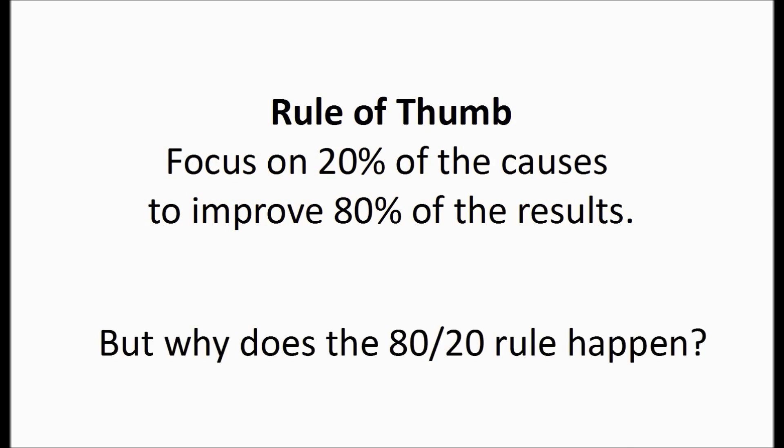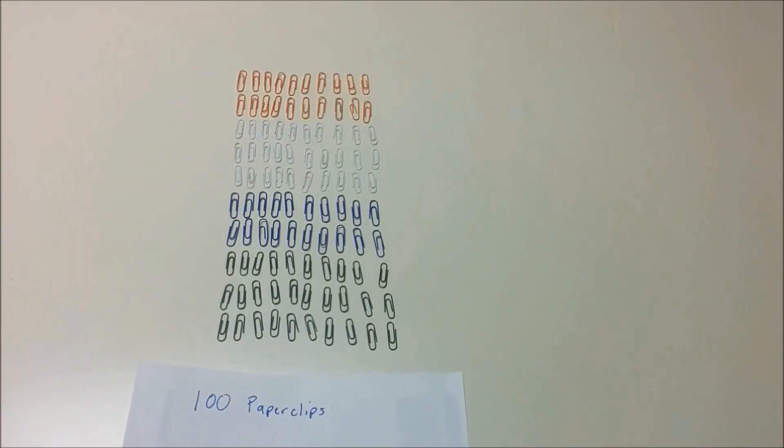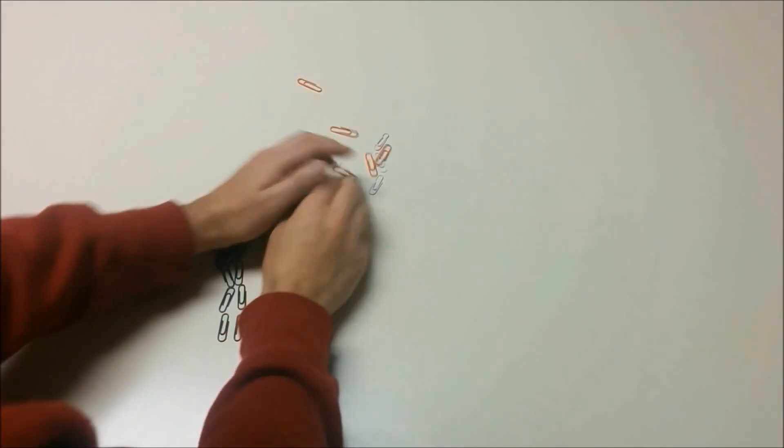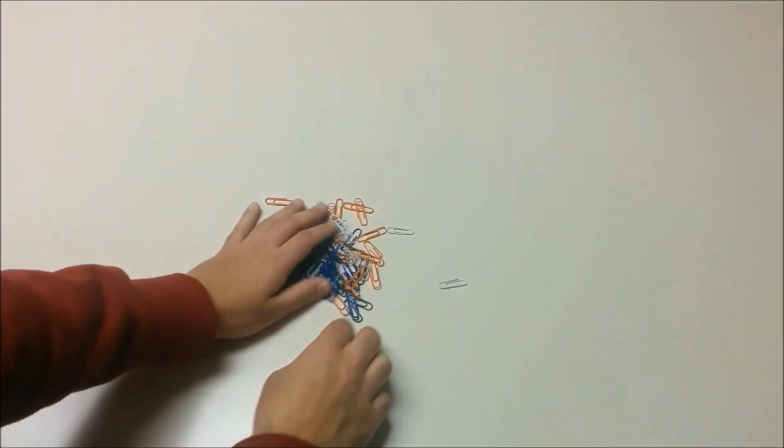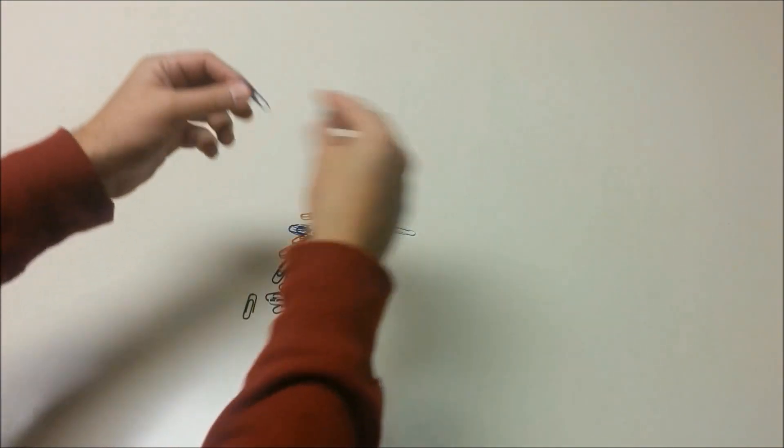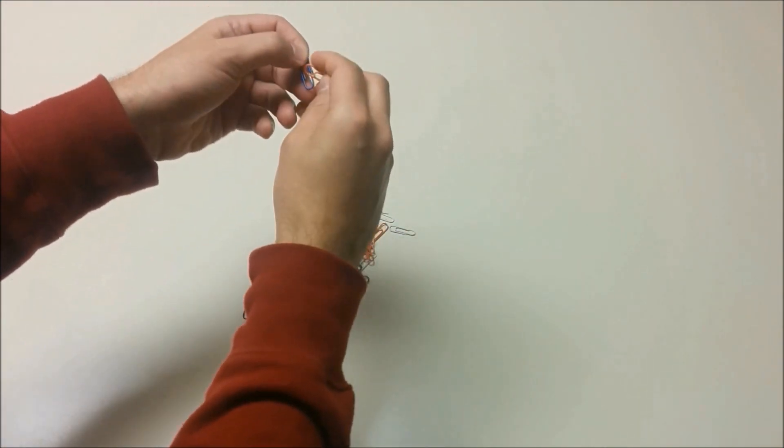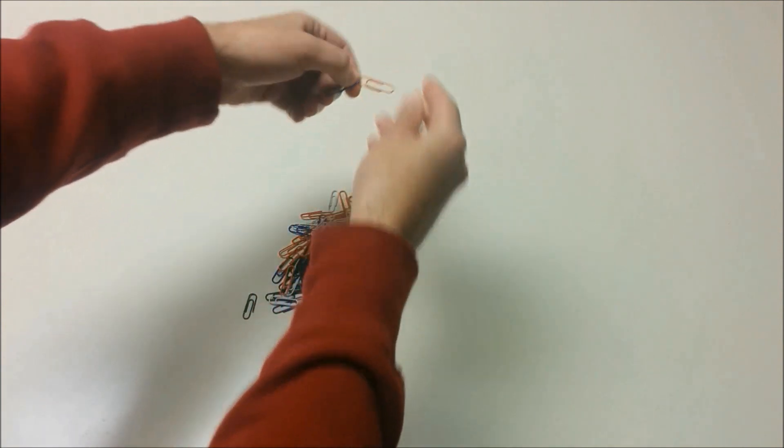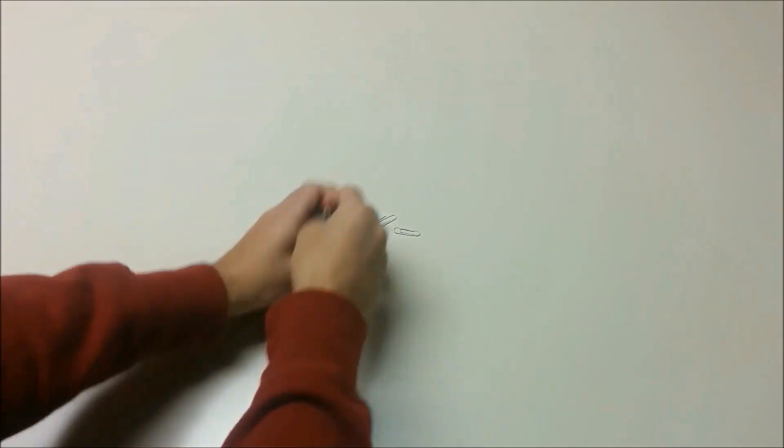But why does it happen? Let's do an experiment to find out. We'll start our experiment with 100 paperclips. We'll mix them into a pile, and select 2 paperclips at random. We'll join those paperclips into a chain, and then we'll put them back into the pile.